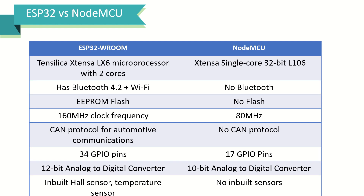Let's quickly compare ESP32 with NodeMCU. ESP32 comes with the Tensilica Xtensa LX6 dual-core microprocessor, whereas NodeMCU comes with a single-core 32-bit Xtensa L106. ESP32 has Wi-Fi plus Bluetooth 4.2 support, but NodeMCU has no Bluetooth. EEPROM flash is available with ESP32 but not with NodeMCU. ESP32 supports 160MHz clock frequency compared to just 80MHz on NodeMCU.